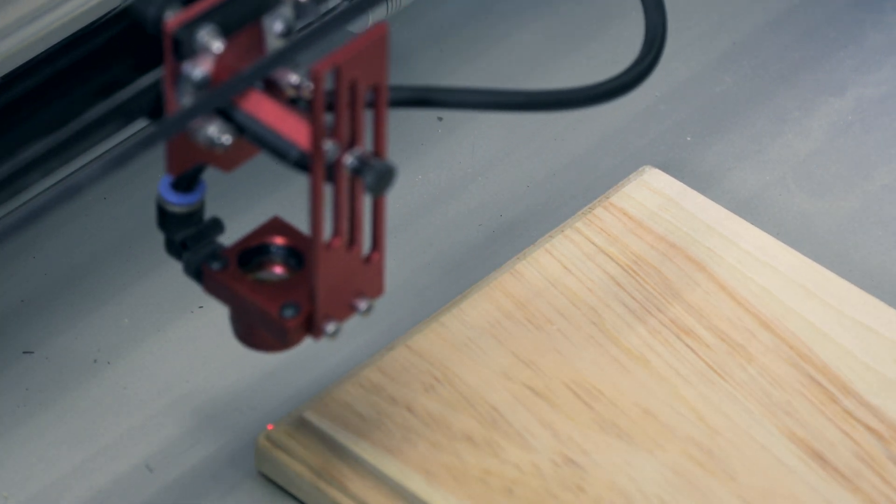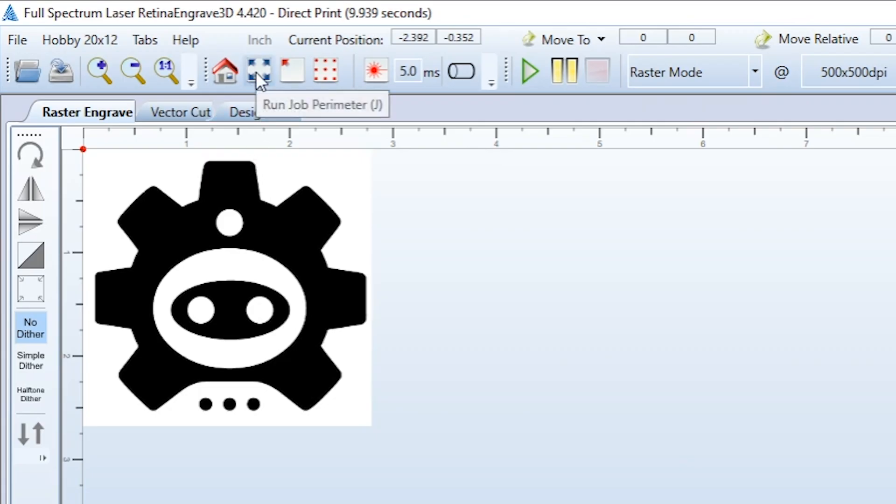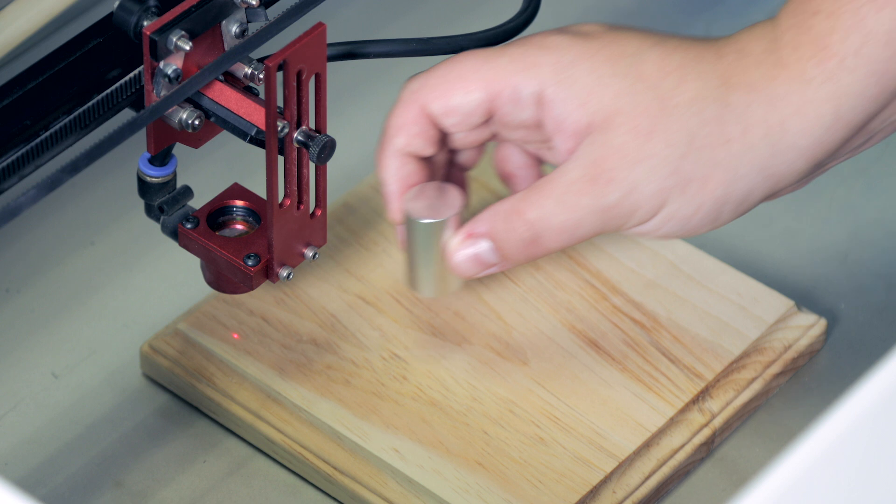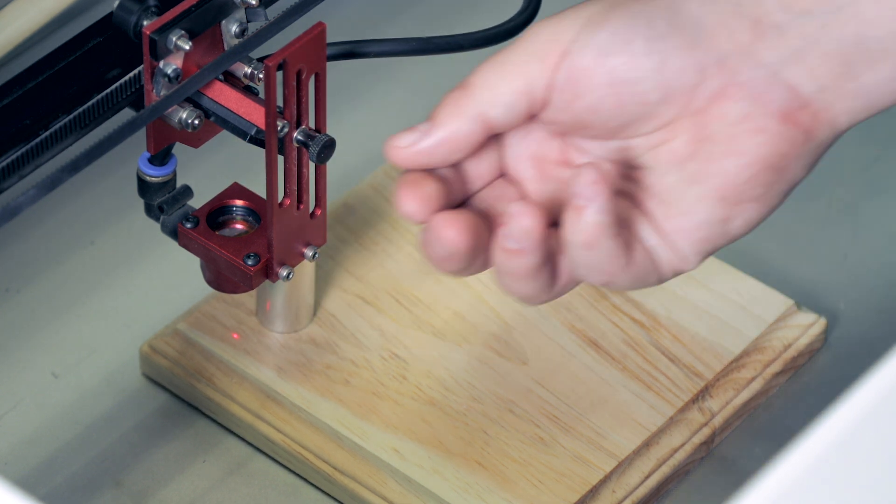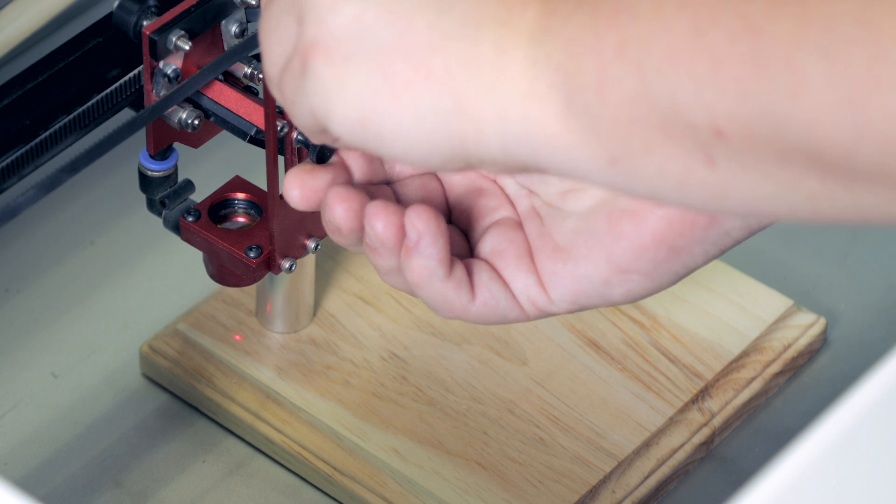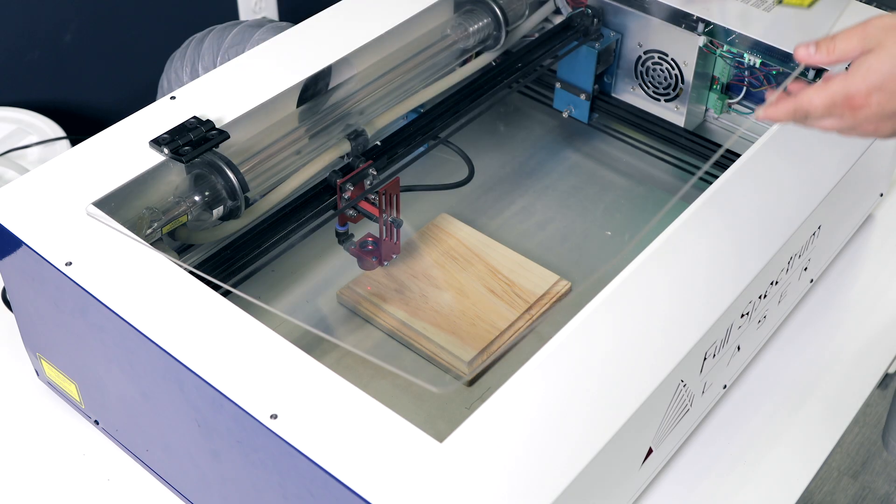Next, position the laser head in the top left corner of the material. Run a perimeter test to make sure the design will fit onto your material. Adjust the head of the laser to the proper distance from the material. Place the metal billet below the cutting head and adjust accordingly. If the head is too high or too low, your etch or cut won't turn out.